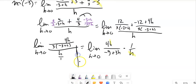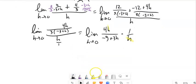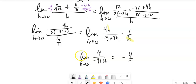So that pushes me to this. Still limit as H approaches 0 of 4. 4 over negative 9 plus 3H. If I plug in 0 for H, now I get negative 4 ninths.